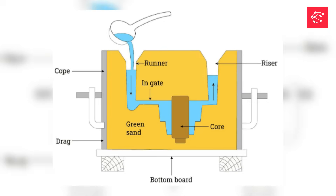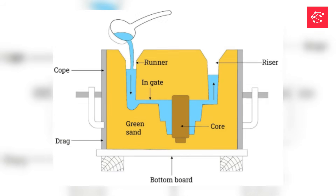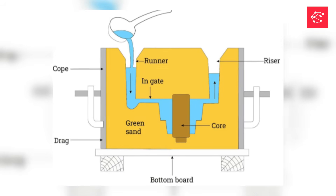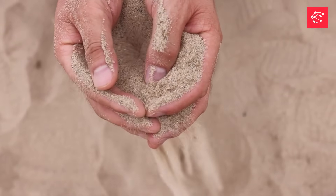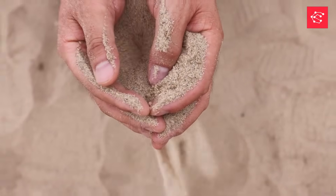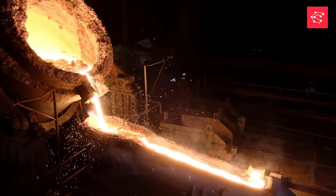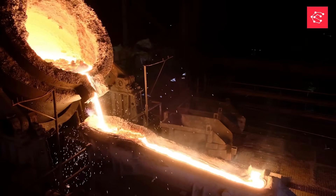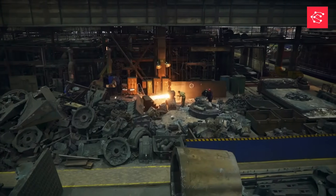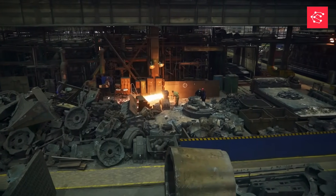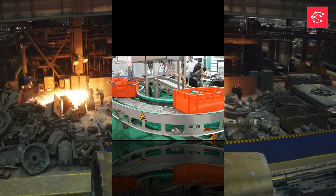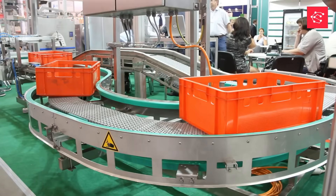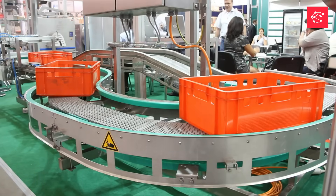Sand mold. Sand molds are one of the oldest and most cost-effective mold types used in gravity casting. They are created by mixing sand with binders to form a strong mold cavity capable of withstanding the heat of molten metal. Sand molding is especially useful for low-cost, single, or small batch production, making it ideal for manufacturers who need flexibility.